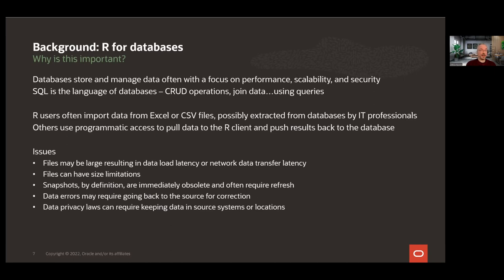We know that files may be large, resulting in data load latency or network data transfer latency, and files can have size limitations as well. By definition, data snapshots are immediately obsolete and often require refreshing. Data errors may require going back to the source for correction, requiring re-retrieving the data. And because we're pulling data, we can lose control over data security. In addition, data privacy laws can even require keeping data in source systems or locations.